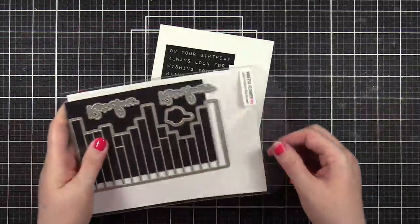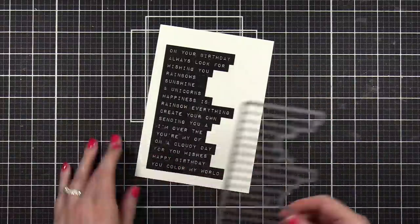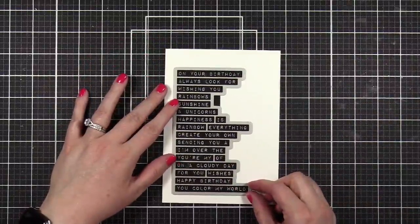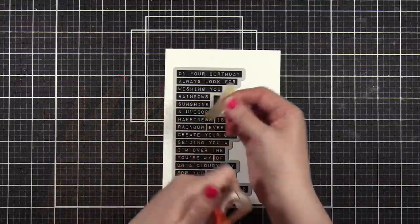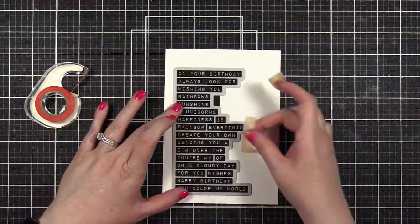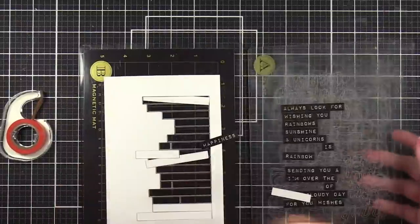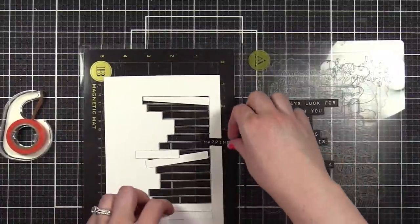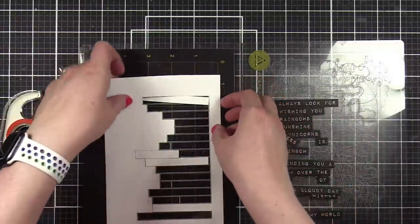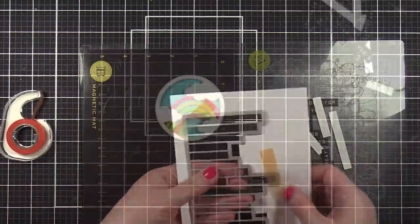We've got our coordinating dies that go with the stamp set. This big piece right here, and you just get it as lined up as possible. Got some EZC tape that I'm gonna use to just hold it in place while I die cut. Oh, beautiful, brilliant! I love this—all the pieces just fall right out.